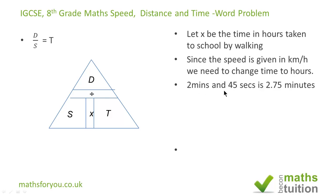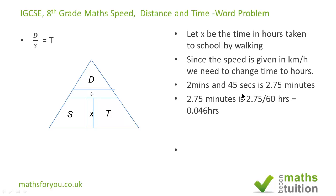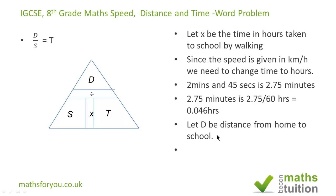Firstly, we need to change two minutes and 45 seconds to the decimal equivalent. It would be 2.75 minutes, because 45 seconds is three quarters of one minute, and three quarters is the same as 0.75. Hence two minutes and 45 seconds is 2.75 minutes. We then convert 2.75 minutes to hours by dividing by 60, which gives us 0.046 hours.